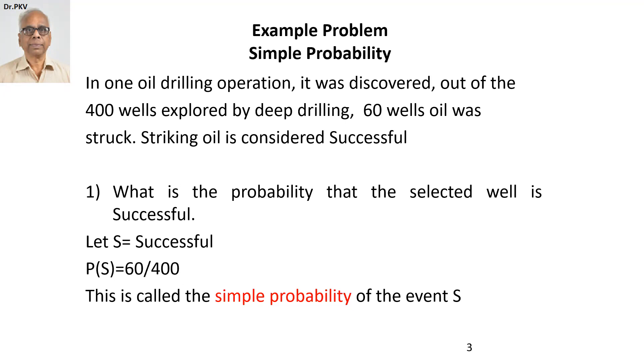Striking oil is considered successful. So out of 400 wells, 60 wells promised and in that 60 cases, oil was struck. What is the probability that the selected well is successful?